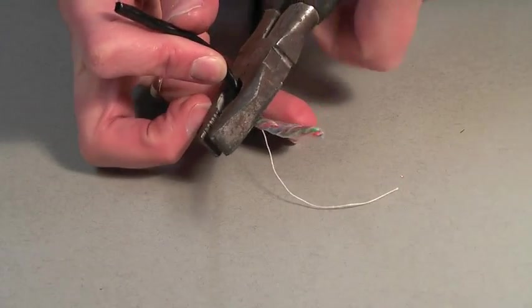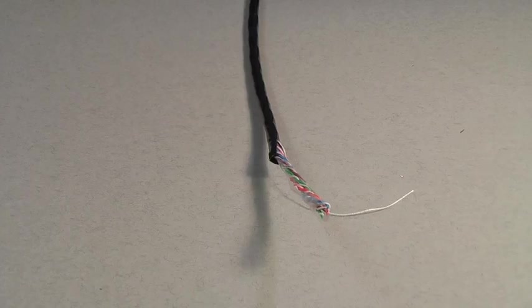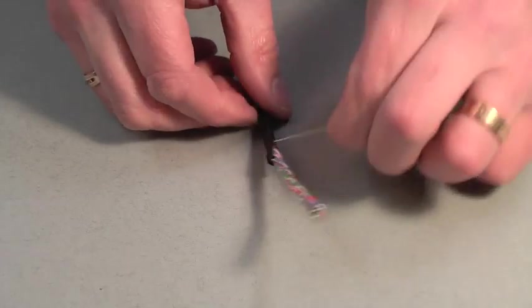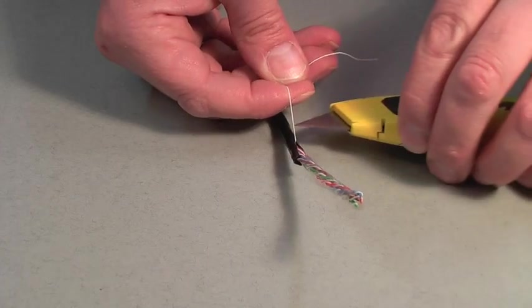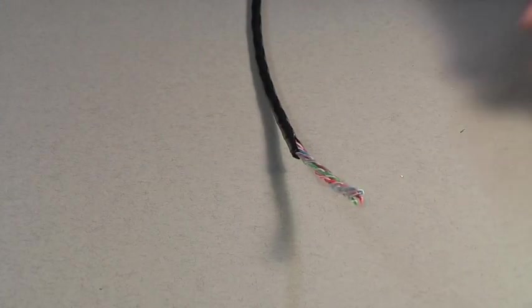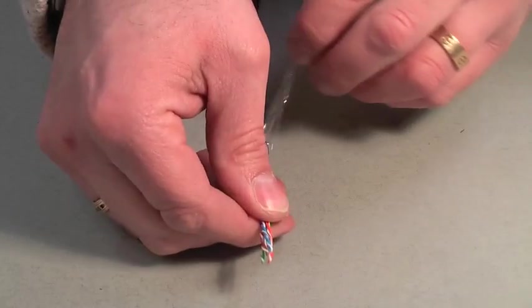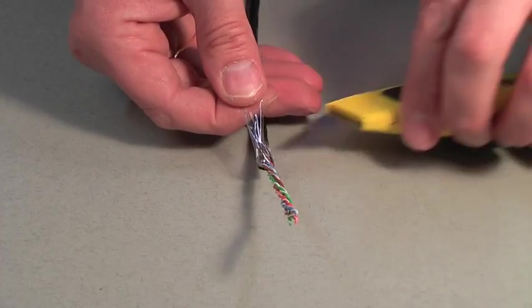First thing we need to do is cut away the outer protection layer. Now clip away the ripcord and finally remove the clear plastic protection and cut that away as well.